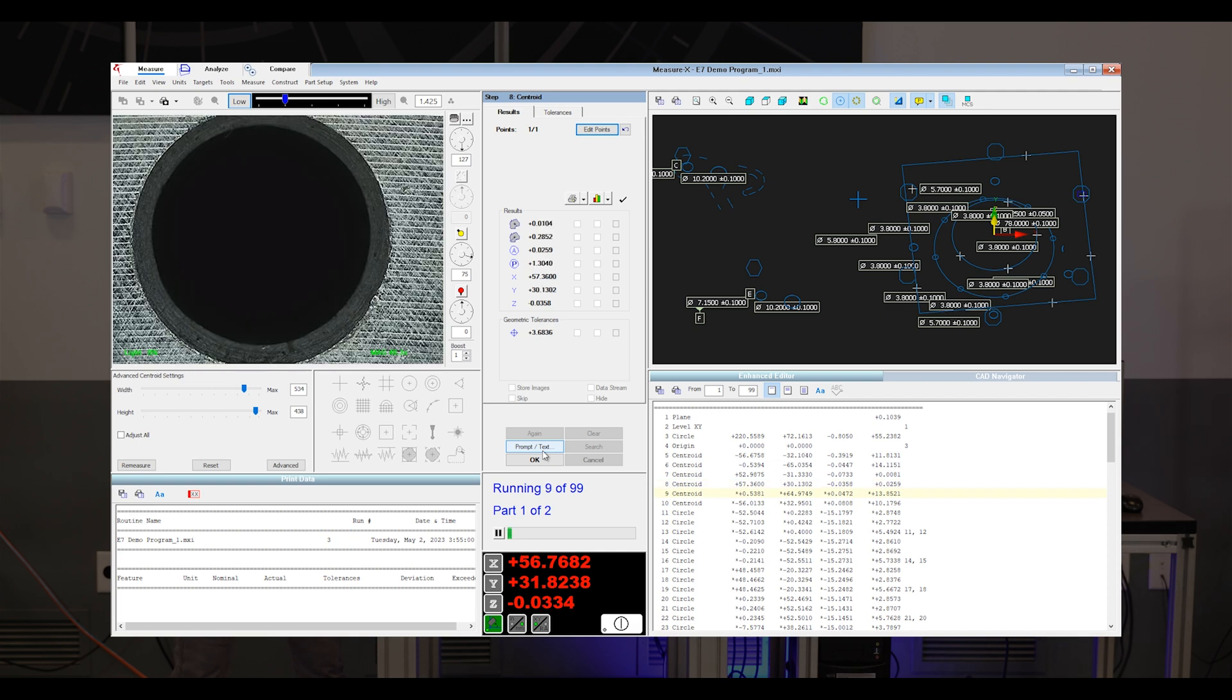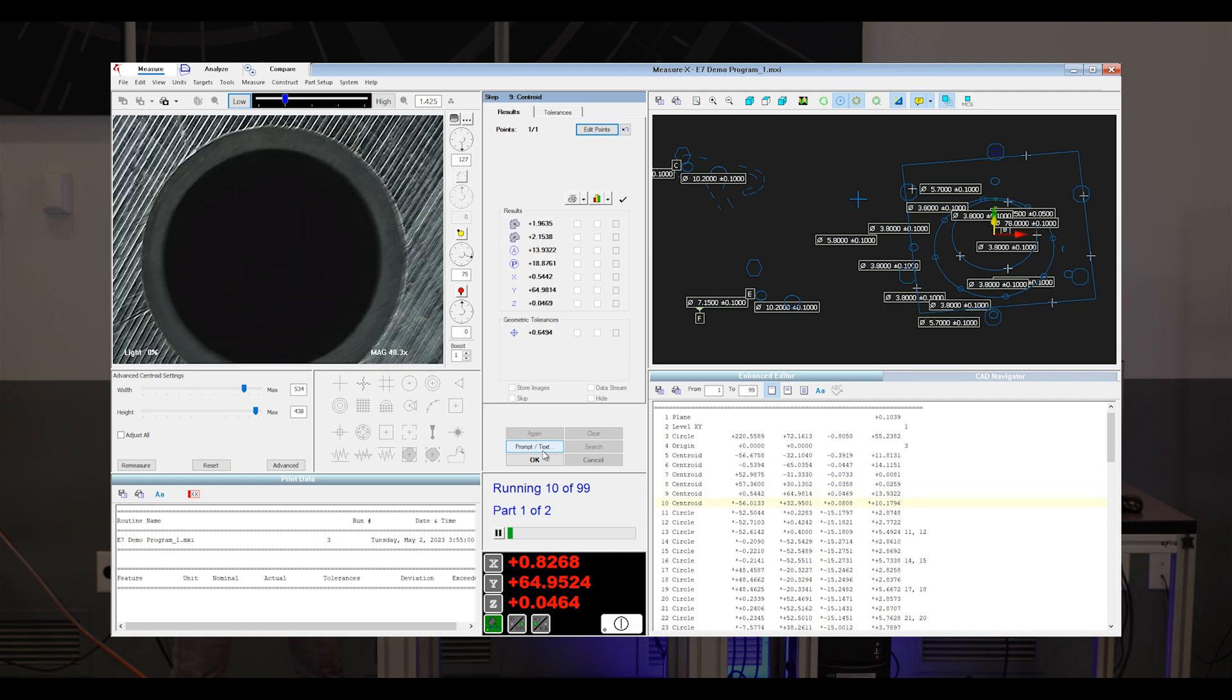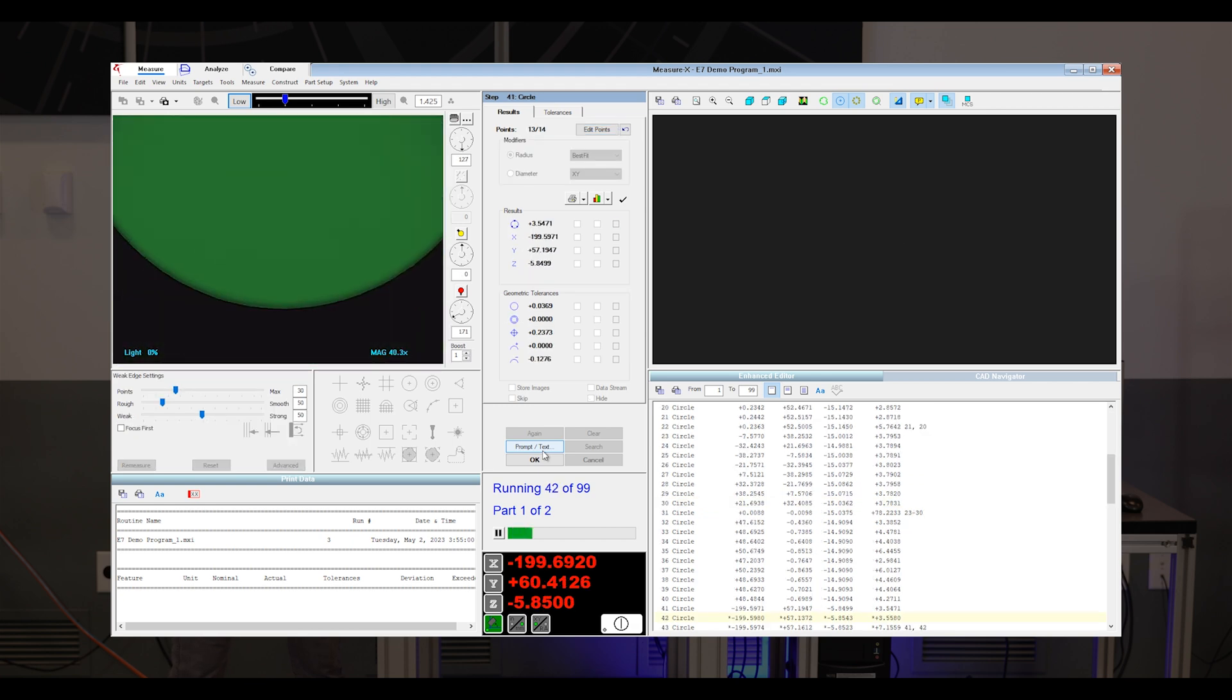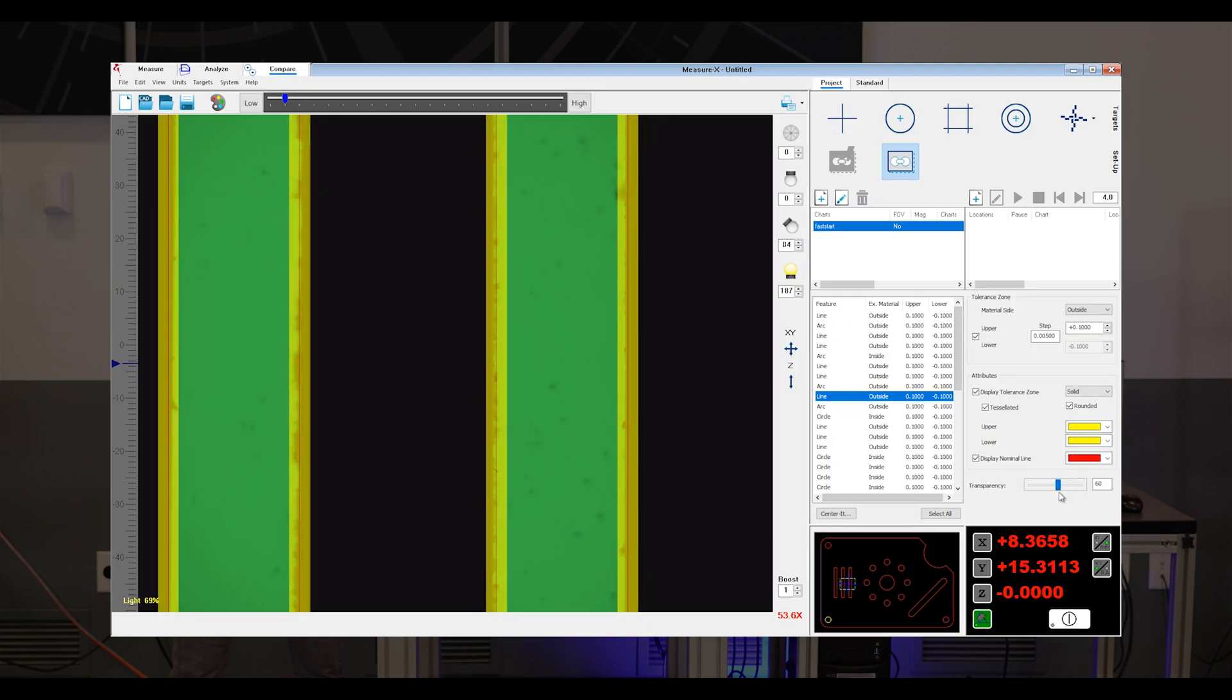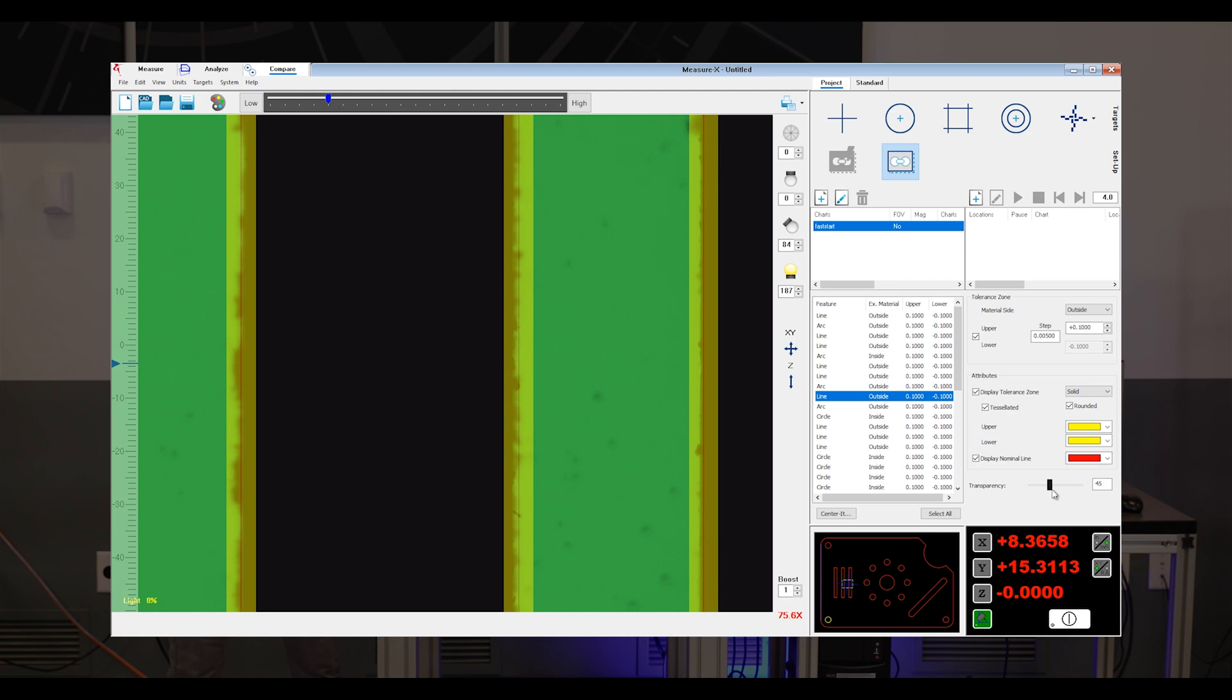CAD models can be imported for automatic generation of measurement routines. OGP edge detection affords operators confidence in video measurement. Compare mode allows operators to fit the part image to CAD overlays on the monitor for fast visual comparisons.